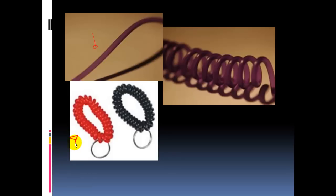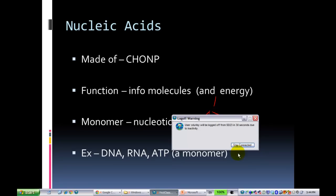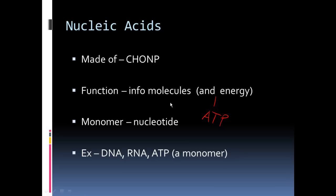That's analogous to quaternary structure. Nucleic acids are our last group of biological molecules, made of C, H, O, N, and P—CHONP. They function as information molecules. ATP also provides energy, but ATP is a nucleotide, not a nucleic acid. Nucleic acid is the polymer; nucleotide is the monomer. DNA and RNA are nucleic acids, while ATP is a nucleotide.